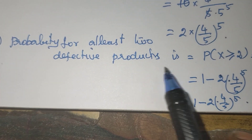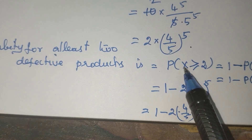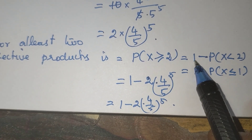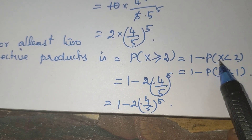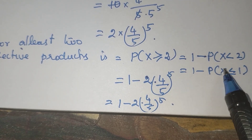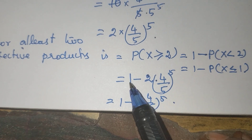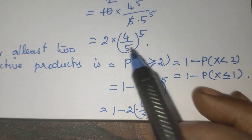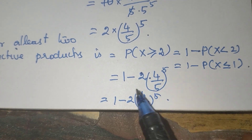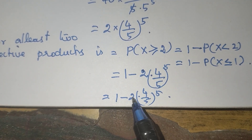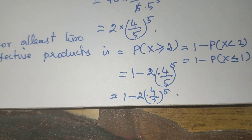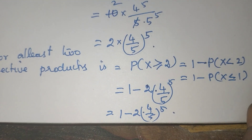Third subdivision: probability for at least 2 defective products is P(X ≥ 2). The formula used is 1 minus P(X < 2), which equals 1 minus P(X ≤ 1). Using the second subdivision result, the answer is 1 minus 2 times (4/5)^5. Thank you.